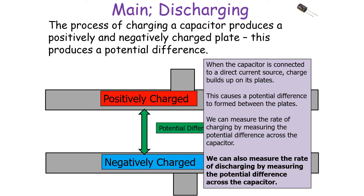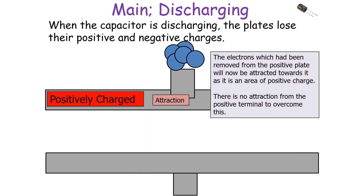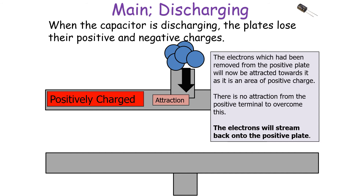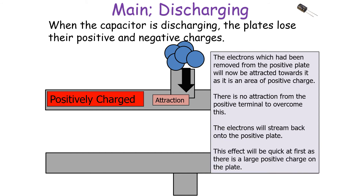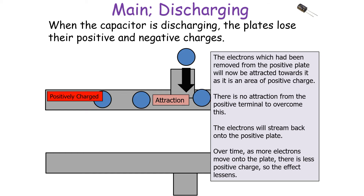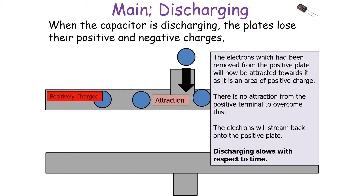We can measure the rate of discharging by measuring the potential difference across the capacitor, as it shows the difference between the positive and negatively charged plates. On the positively charged plate, the electrons that were removed will now be attracted back to it since there is an area of positive charge on that plate and no attraction from the positive terminal to overcome this. So the electrons stream back onto the positive plate. This effect is quick at first due to the large positive charge, but over time as more electrons move onto the plate there's less positive charge, so the effect lessens and discharging slows with respect to time.